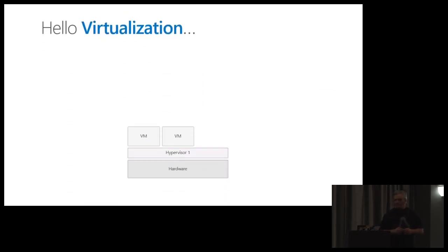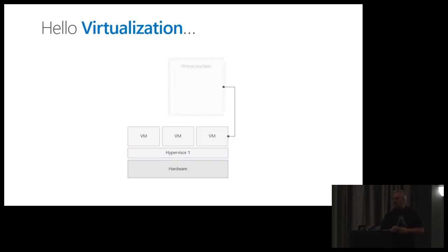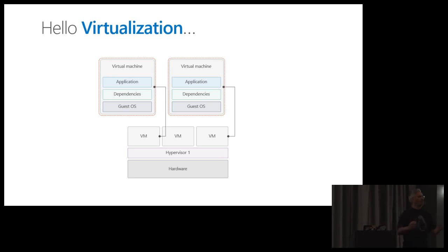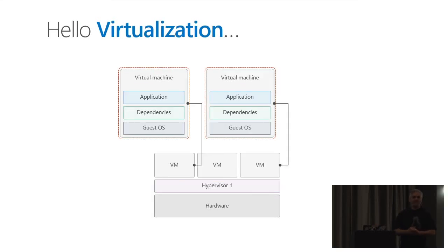Hello, virtualization. Virtualization is a great technology because we could take that very same hardware and put virtual machines inside of it. We could spin up these virtual machines, and if we cracked open one, it would look like a physical machine. Inside the virtual machine, we could install our Linux operating system, dependencies and the applications, and we could have multiple virtual machines on this physical hardware. But it's not as efficient as it could be. If we look at this virtual machine, we've got a duplicate operating system, and if we're using the same application dependencies, it's a duplication as well.